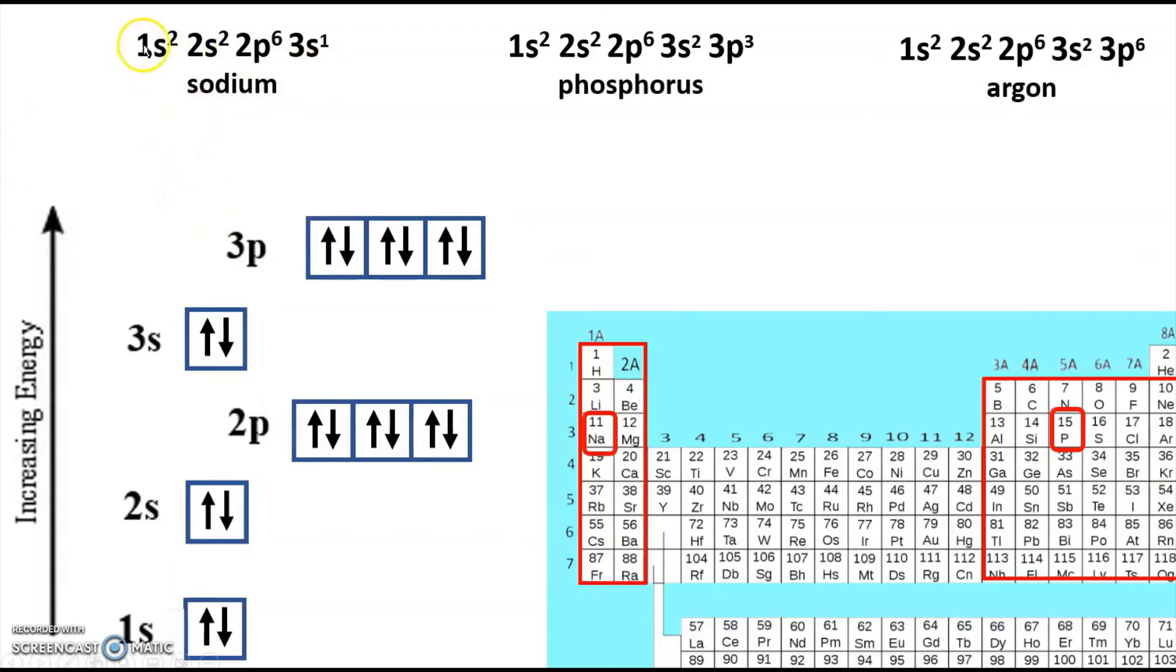Instead of having to rattle off 1s2, 2s2, 2p6, 3s1 for sodium, hopefully everybody would agree that the notation 1s2, 2s2, 2p6 actually spells out neon. That's the electron configuration for neon, 1s2, 2s2, 2p6. So instead of writing the entire thing out, the idea is you just put neon in brackets and then include the rest that's unique to sodium. So it would be just neon and then 3s1.